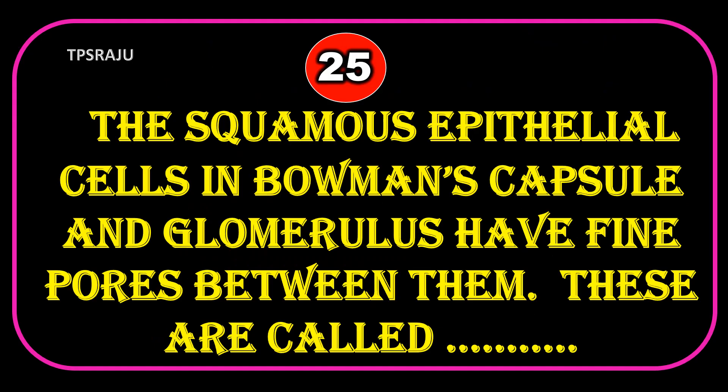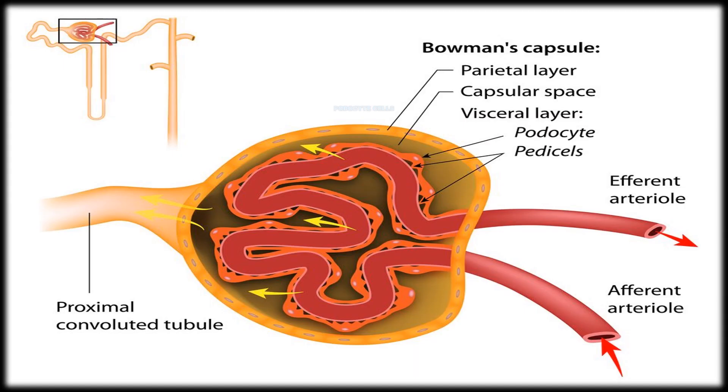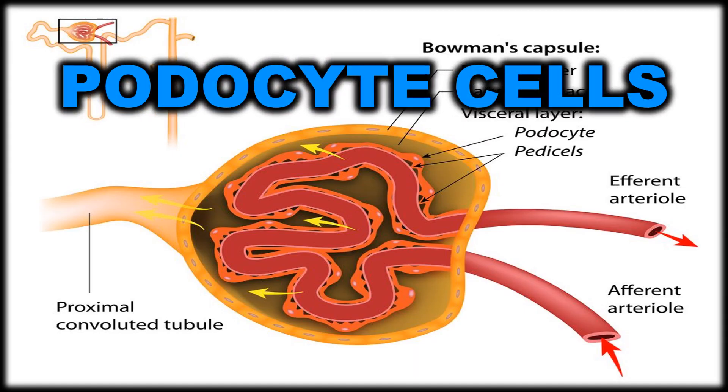The squamous epithelial cells in Bowman's capsule and glomerulus have fine pores between them. These are called Podocyte cells.